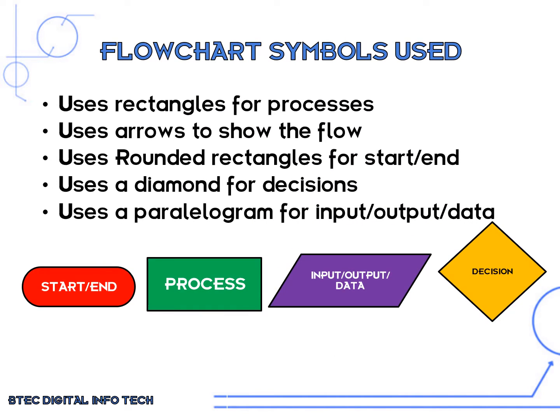The symbols we need to use are shown here. They are rectangles for processes, arrows to show the flow, rounded rectangles for the start and end, a diamond for any decisions, and a parallelogram for input, output, or data.